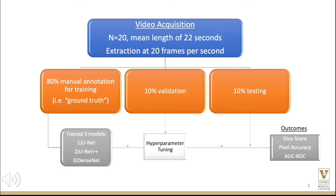20 videos were acquired, each with a mean length of 22 seconds. Frames were extracted at a rate of 20 frames per second. 80% of our sample was manually annotated for model training, 10% was used for validation, and 10% was used for testing.